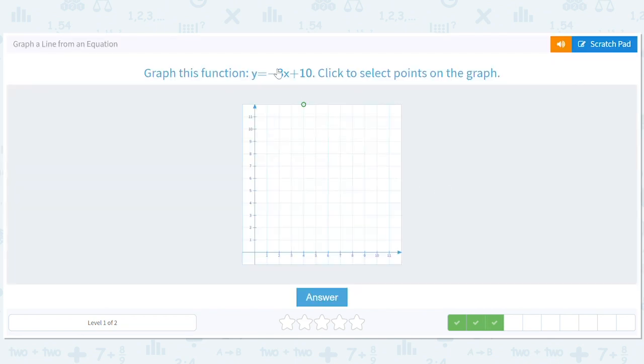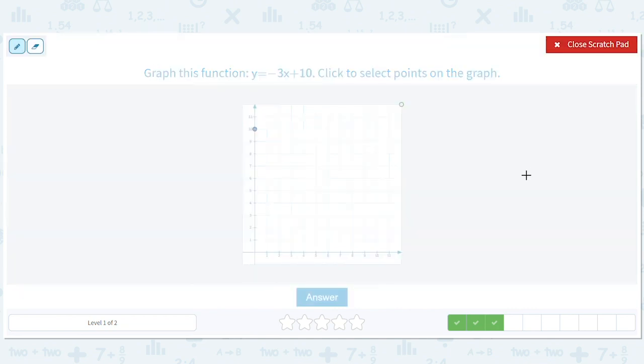This is interesting. So we know that the y intercept is 10. Let's see what negative three means. So rise over run. Now you can choose where to put the negative. I think it's up to you, but I like to put it on the top. Which means that I have to run one to rise negative three, or I have to move one to the right to fall three.